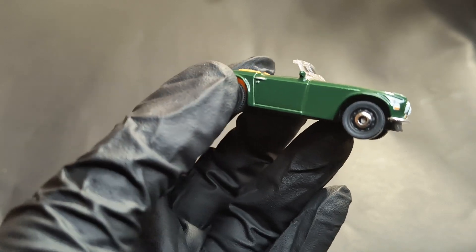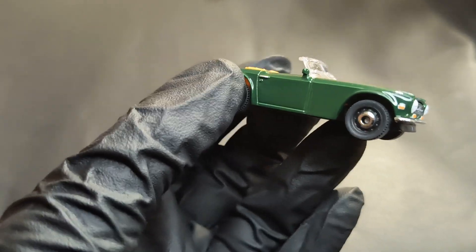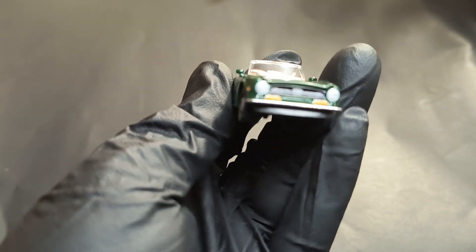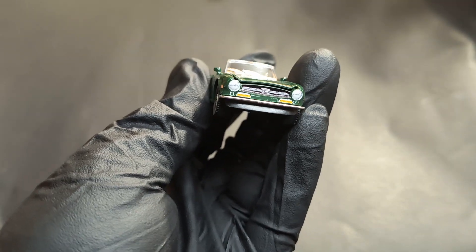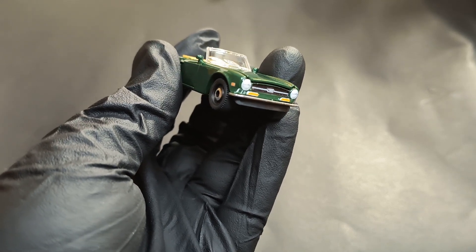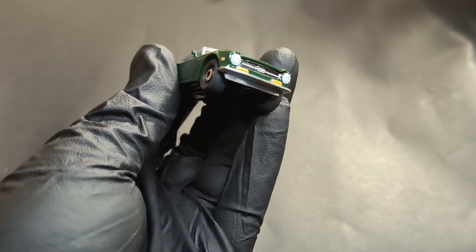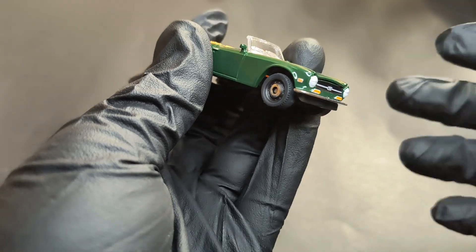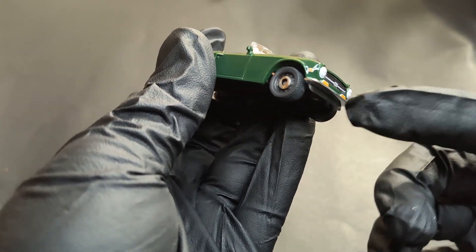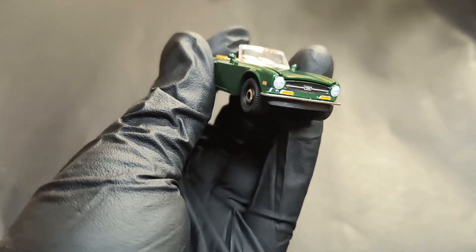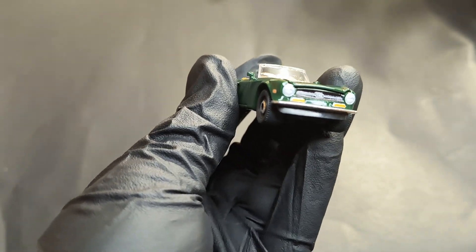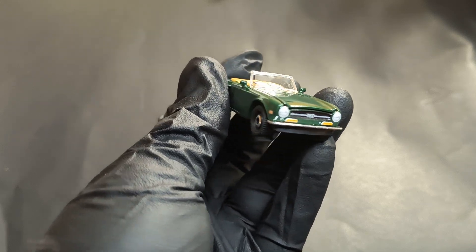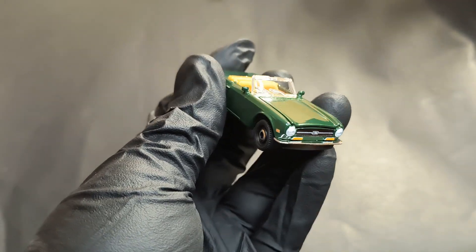Up front, nice details. You can see detailed headlamps, turn indicators, chrome bumper. Normally you won't have a different color, but here you can see the black bottom part and the chrome bumper up front. You can also read TR6 on the grill. You'll see a slight bump on this one because it has an opening hood. We'll talk about that later.